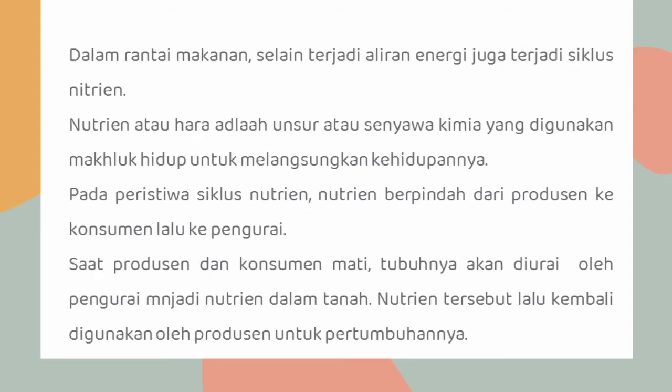Energi tersebut akan berpindah saat makhluk hidup tersebut dimakan oleh makhluk hidup lainnya. Dalam rantai makanan, selain terjadi aliran energi, juga terjadi siklus nutrien. Nutrien atau hara adalah unsur atau senyawa kimia yang digunakan makhluk hidup untuk melangsungkan kehidupannya. Pada peristiwa siklus nutrien, nutrien berpindah dari produsen ke konsumen lalu ke pengurai. Saat produsen dan konsumen mati, tubuhnya akan diurai oleh pengurai menjadi nutrien dalam tanah. Nutrien tersebut lalu kembali digunakan oleh produsen untuk pertumbuhannya.